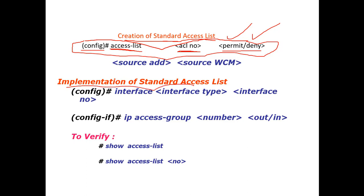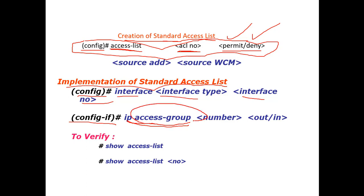Here is an example implementation of a standard ACL. You configure the interface type and interface number. There is also another method using IP access group — where you are permitting or denying a complete group to a host, server, or another network through your router. You can manage groups, interfaces, and specific entries. To verify, you use the command 'show access-list' or 'show access-list [number]'.